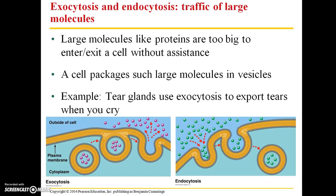Exocytosis and endocytosis have to do with traffic of large molecules. Large molecules can include proteins that are too big to enter or exit a cell without assistance. A cell is actually going to package these large molecules up in vesicles — these transport vesicles. An example of this is our tear glands; we use the process of exocytosis to export tears when we cry. Exocytosis means molecules are exiting the cell, while endocytosis means that molecules are going to be entering the cell.